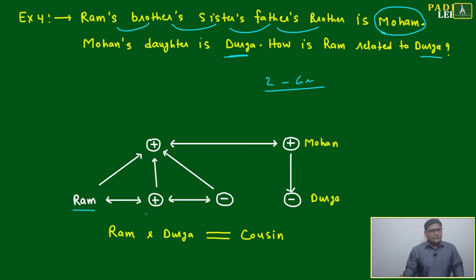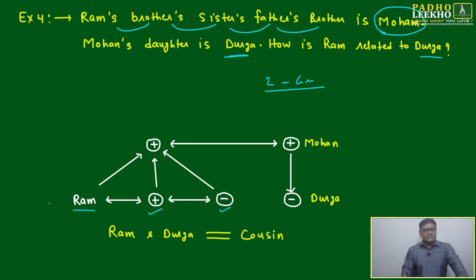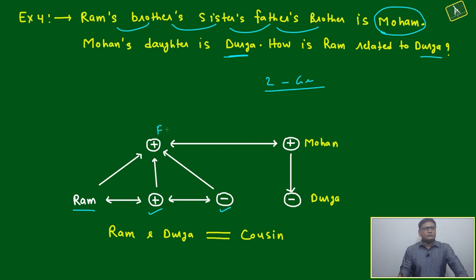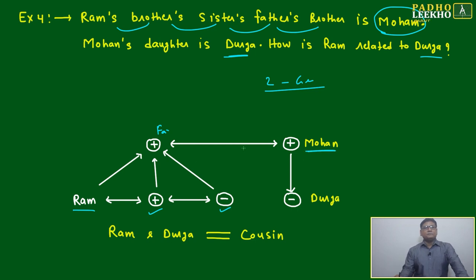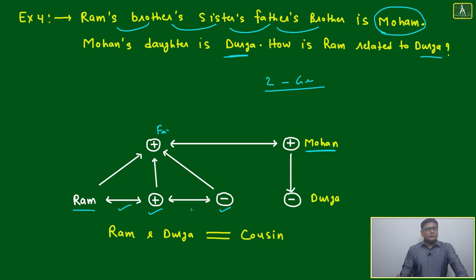Let's try to understand. Ram's brother — someone plus brother. Brother's sister — someone minus. Means these three are sharing the same parents — they are having the same father. Father's brother is Mohan. These two are brothers to each other, shown with a double-headed arrow. Similarly, we have used this generation gap.